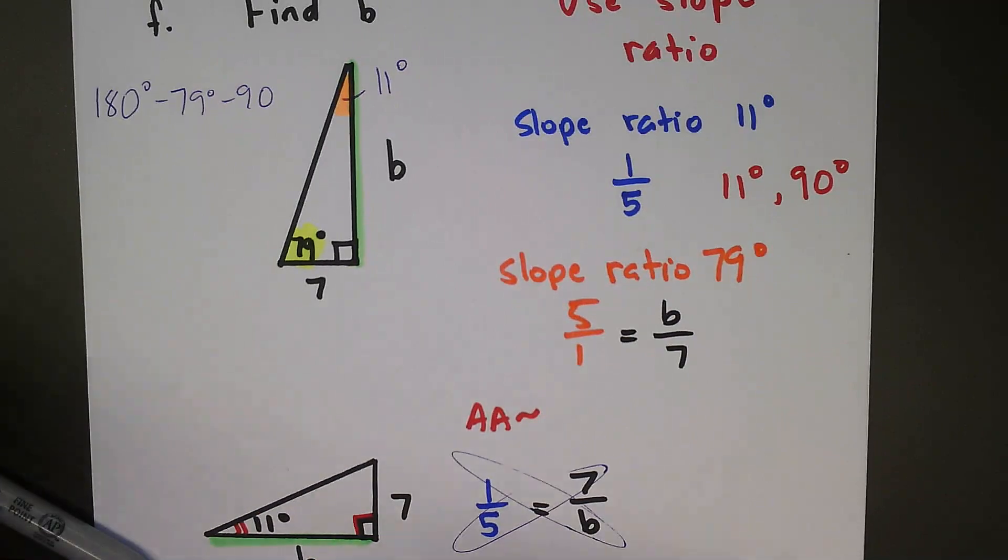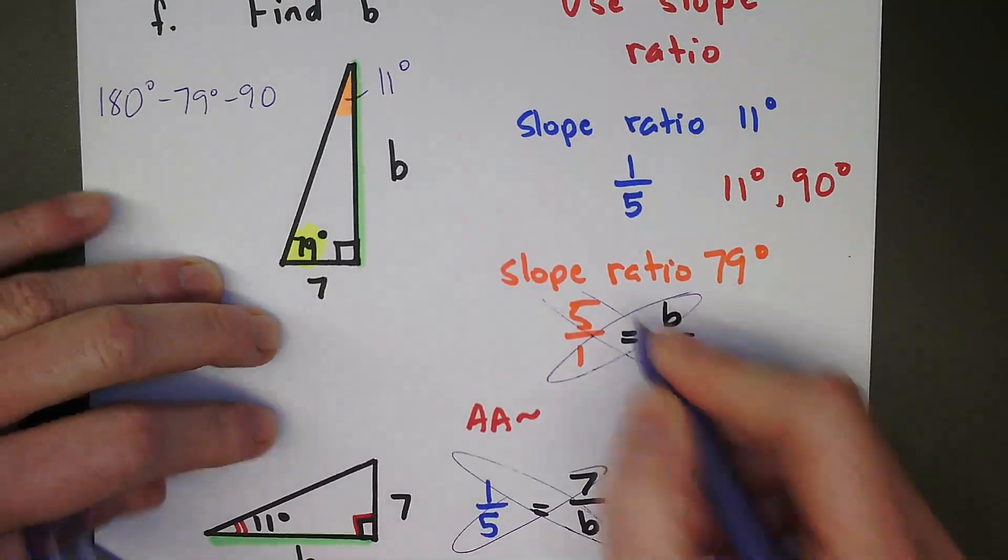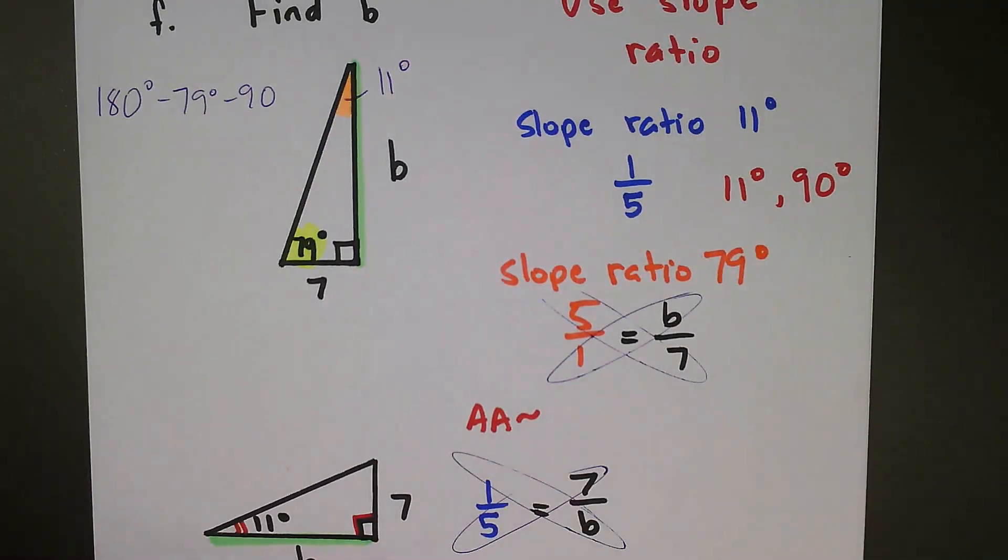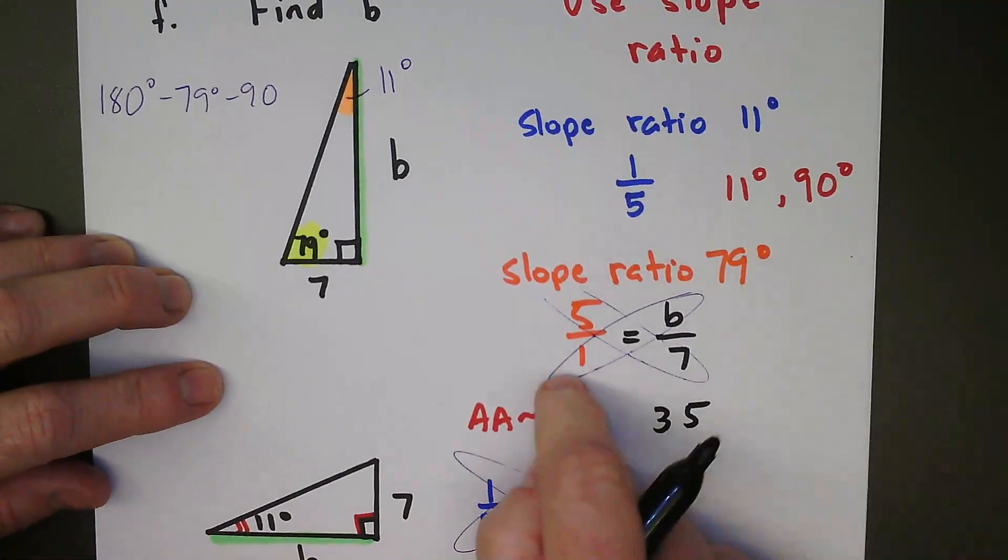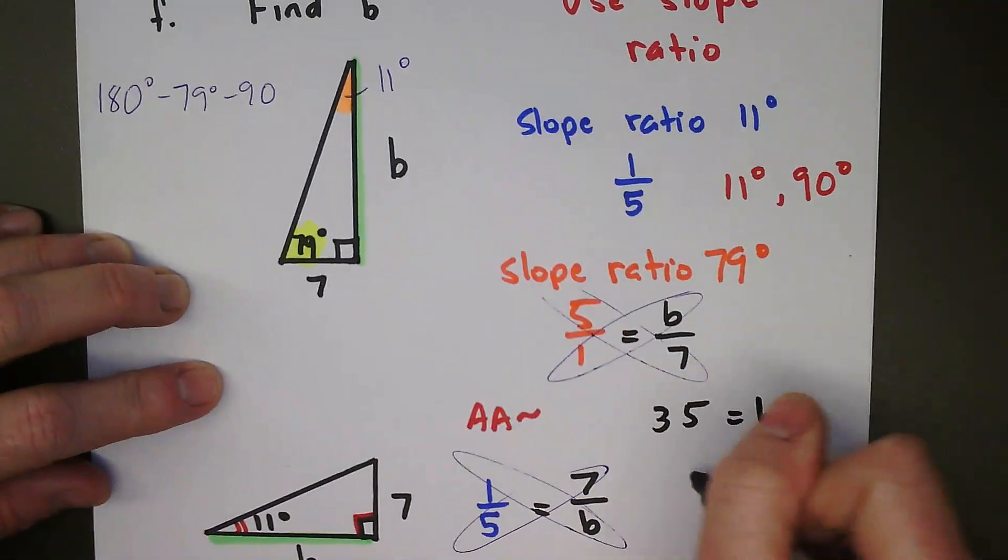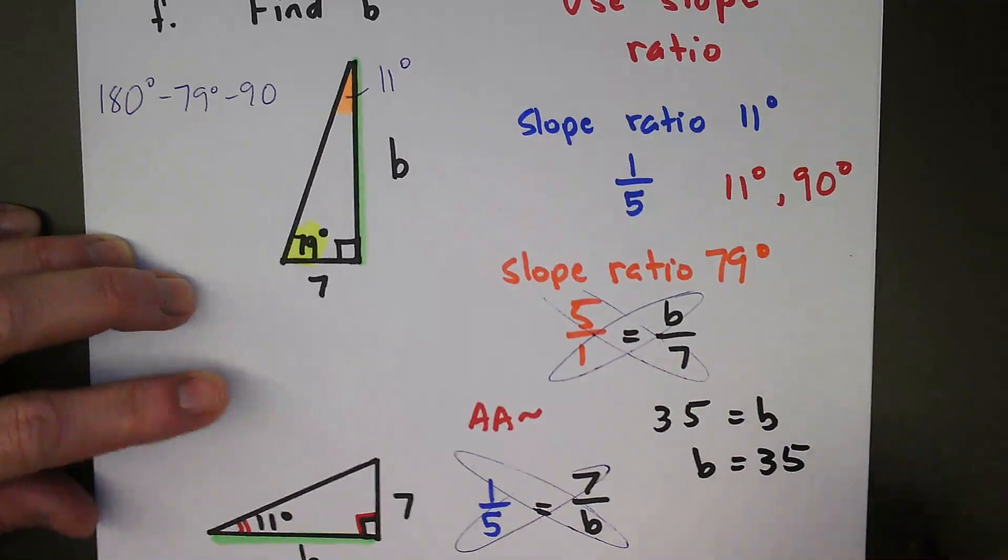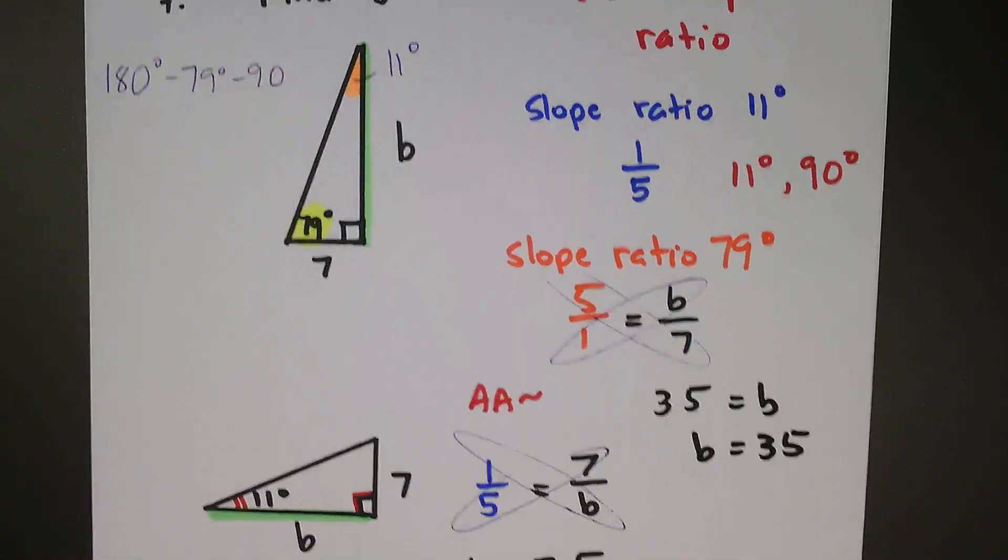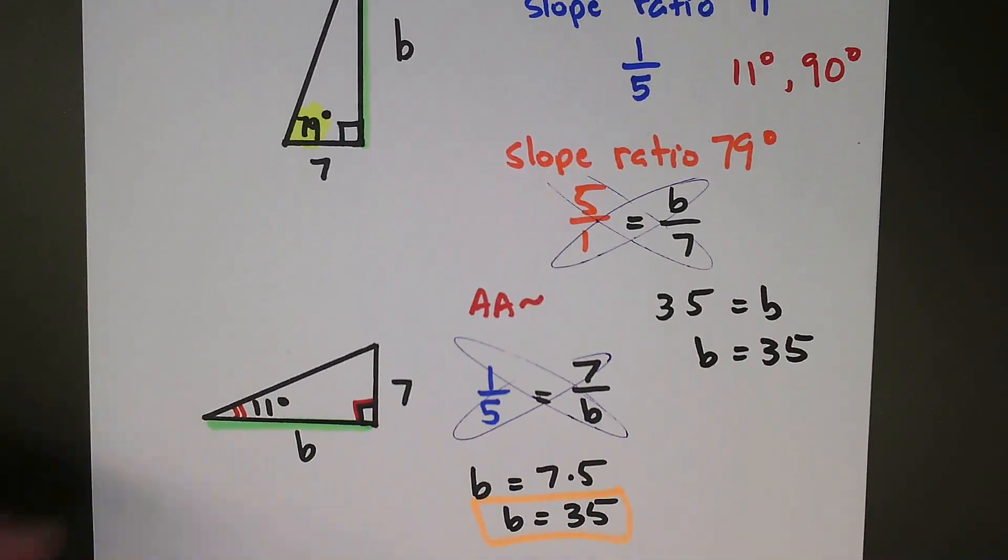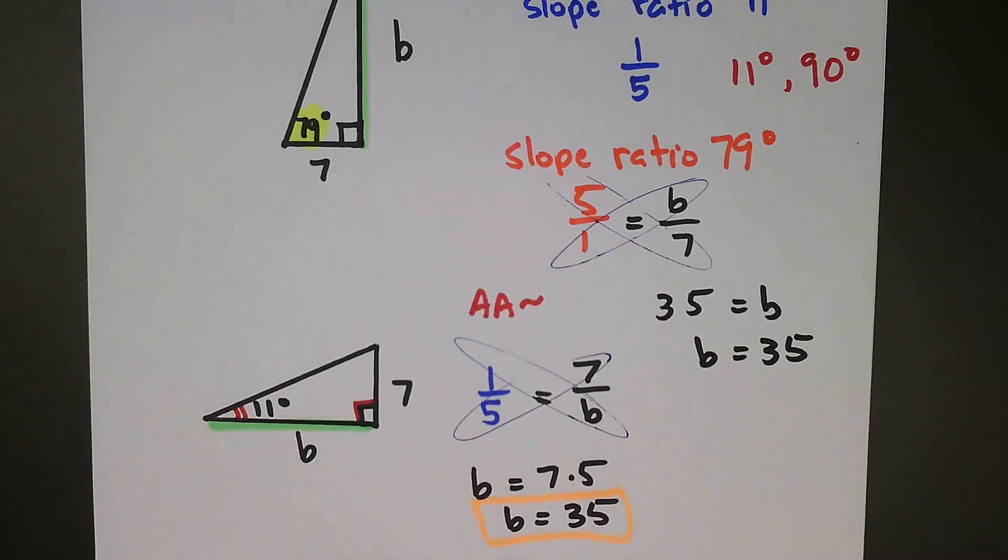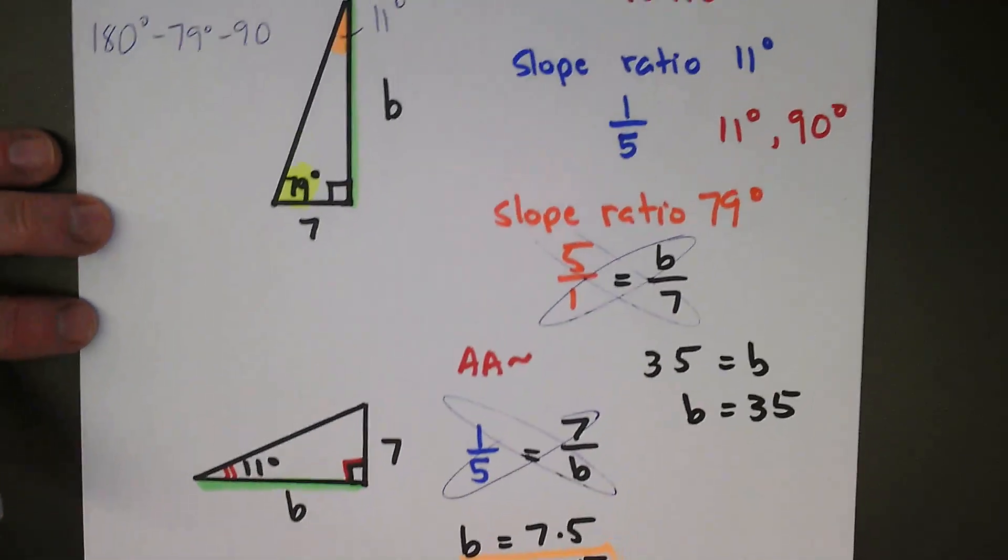We do the same thing, right, cross products. And we're going to get 5 times 7 again. We're going to get B times 1. So if you notice, we get the exact same answer, which should make sense, because the length of B should not change as we turn that triangle. So we should get 35. Either way we do it.